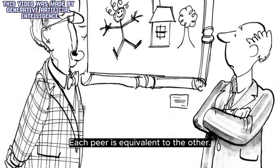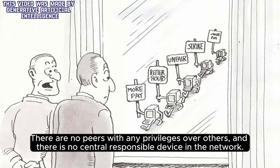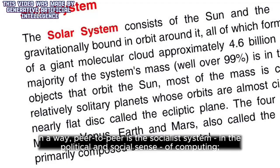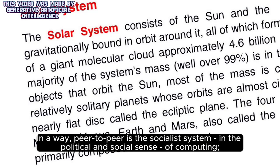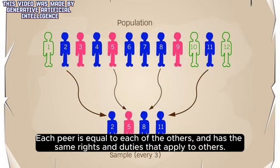Each peer is equivalent to the other. There are no peers with any privileges over others, and there is no central responsible device in the network. In a way, peer-to-peer is the socialist system in the political and social sense of computing — each peer is equal to each of the others, and has the same rights and duties that apply to others.